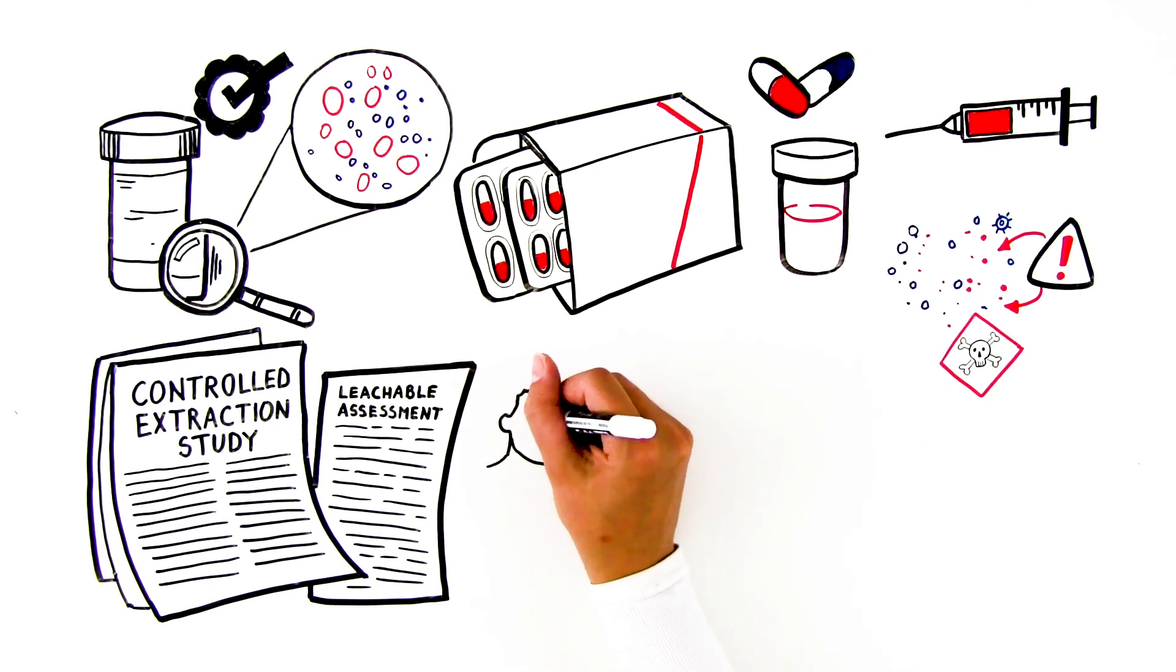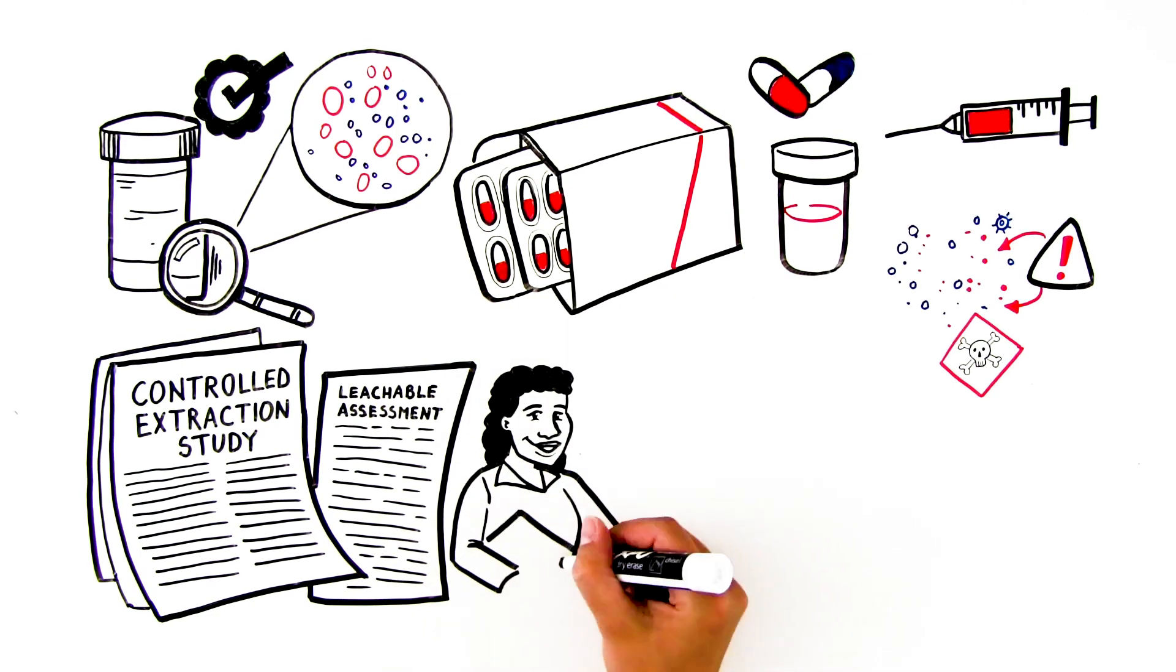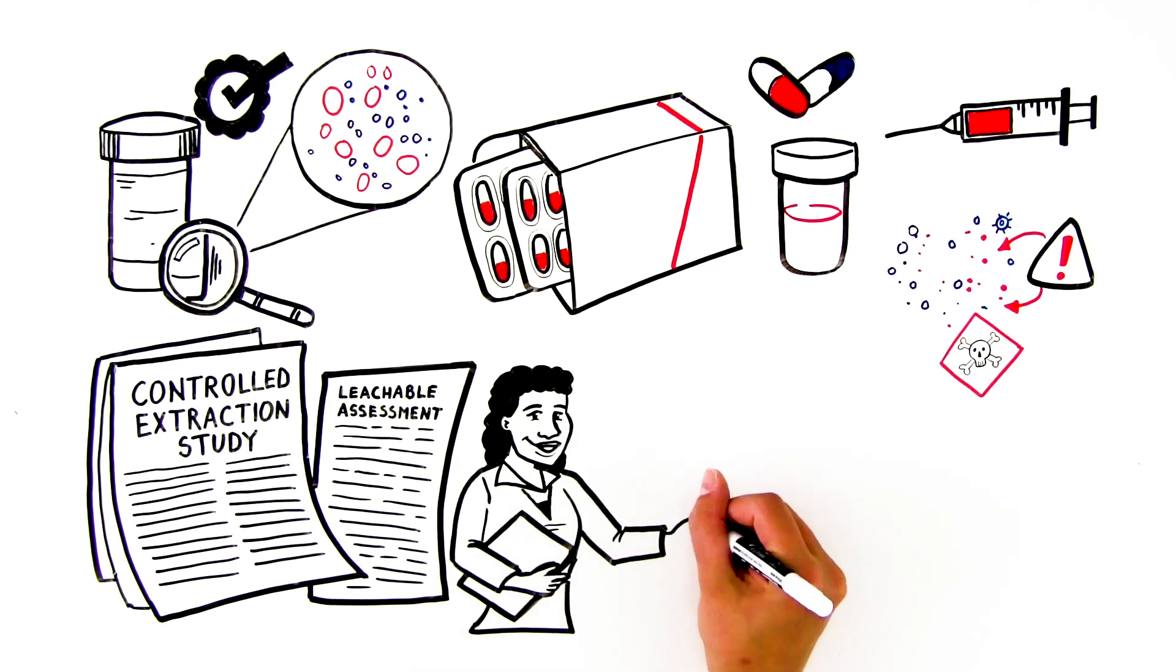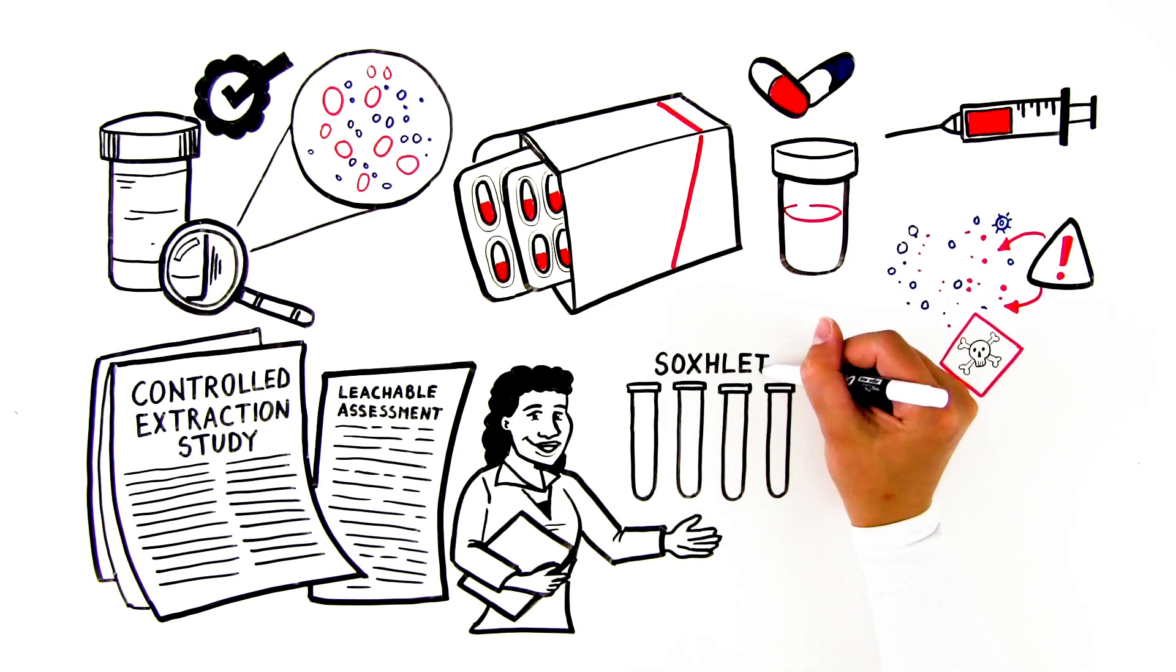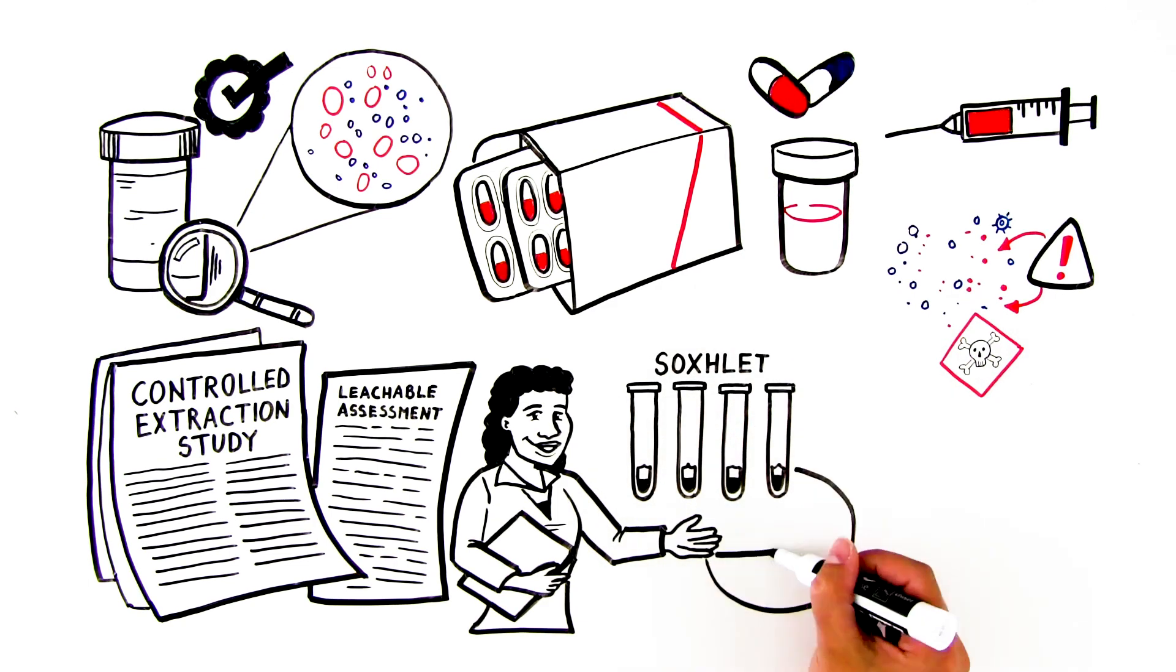Controlled extraction studies are material-based and are used to understand the extractables profile of the material for the purposes of predicting potential leachables. Aggressive organic solvents or solvent mixtures, acids, and bases are used with Soxhlet or solvent reflux and other techniques to extract materials.